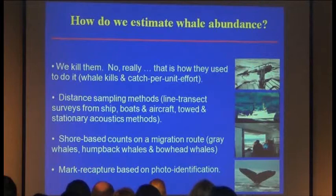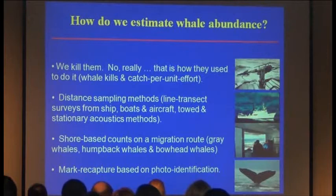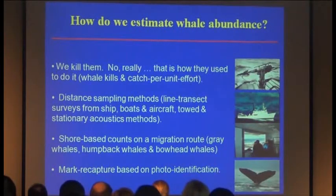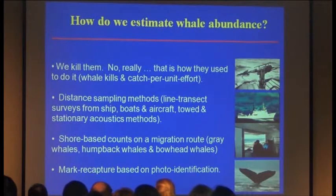So how do we go about estimating abundance? There are four main methods. One is we kill them — no really, that's actually how they used to do it. Whales were killed in the process of whaling, catch per unit effort declined, and the rate of that decline was related to how many whales were killed. That's how you found out how many whales there used to be before you killed them all. That was not very effective, and we've developed some more effective tools recently.